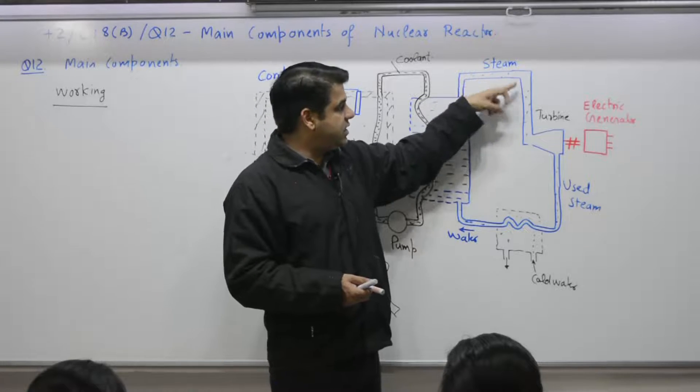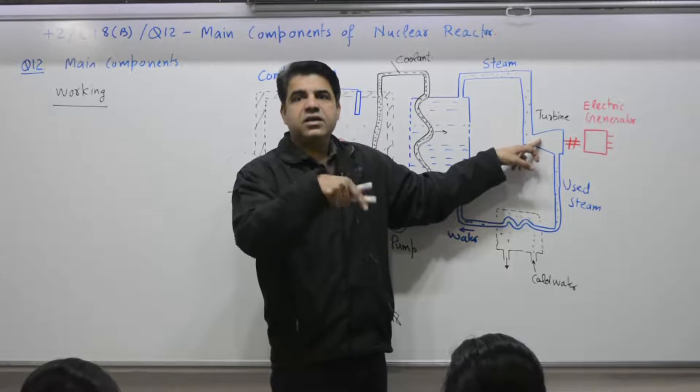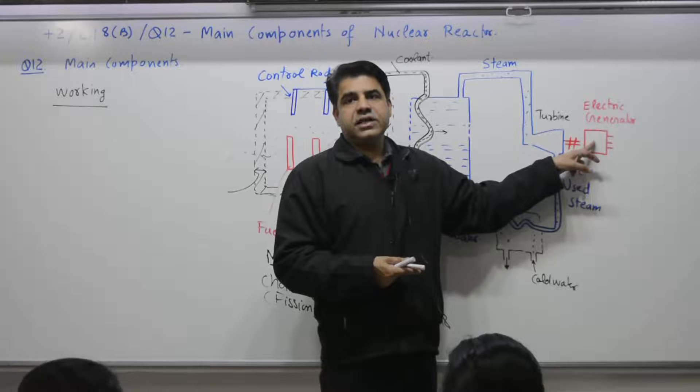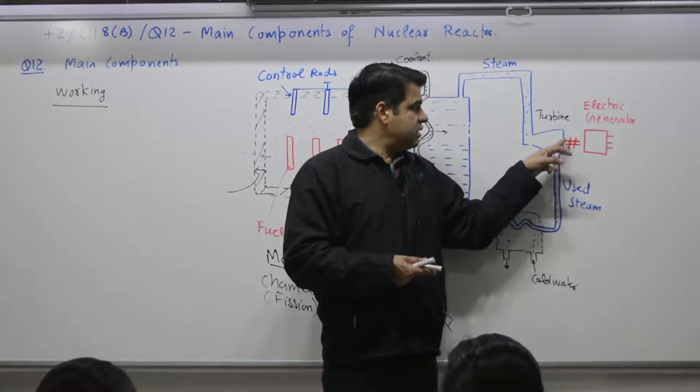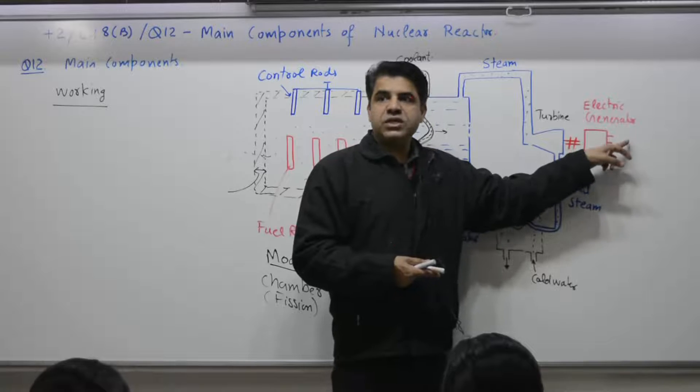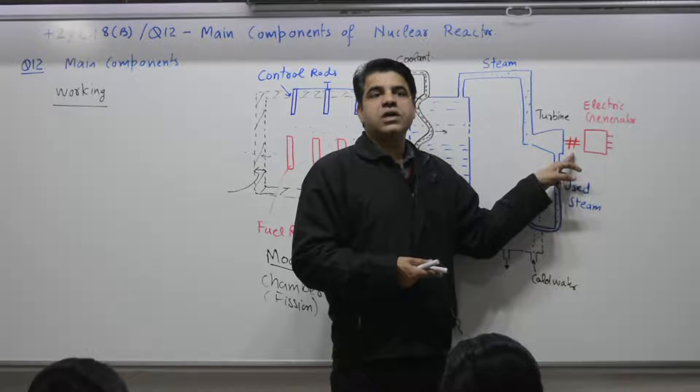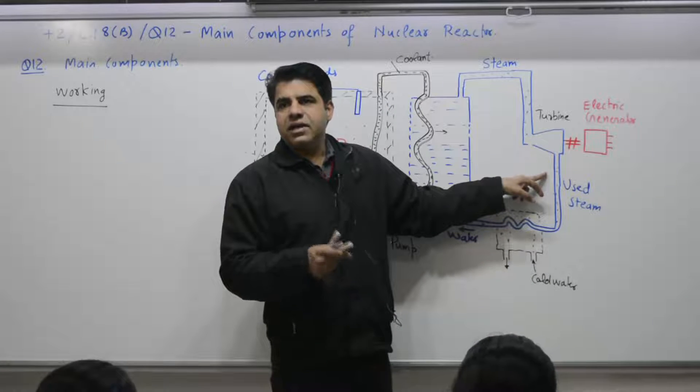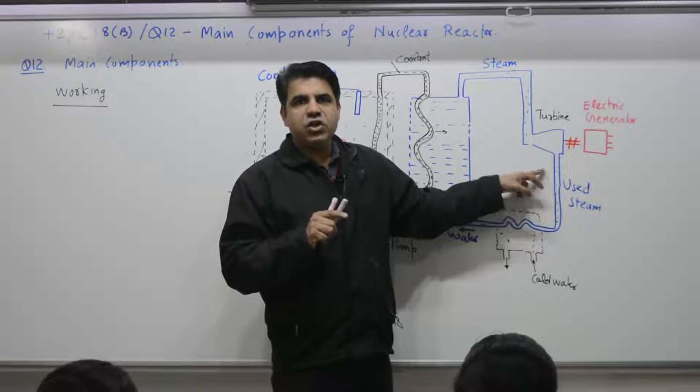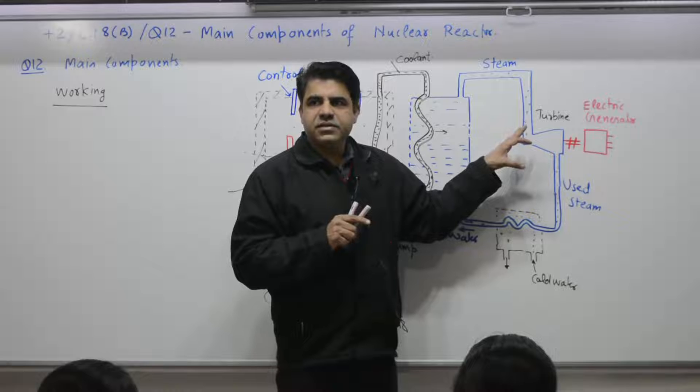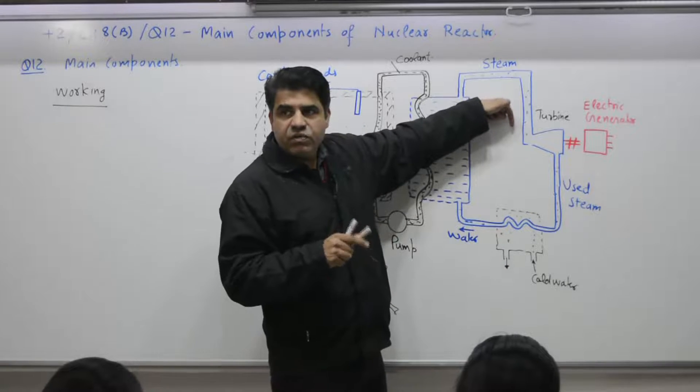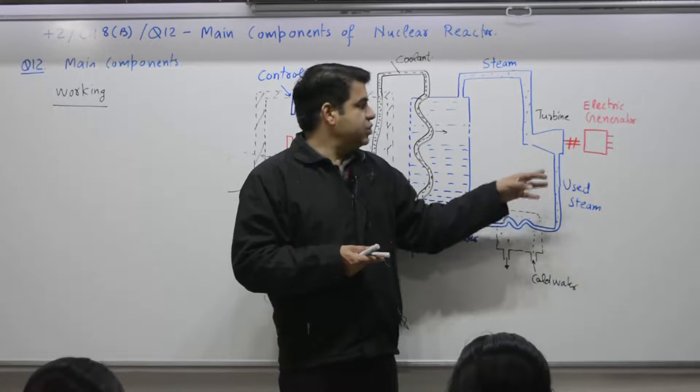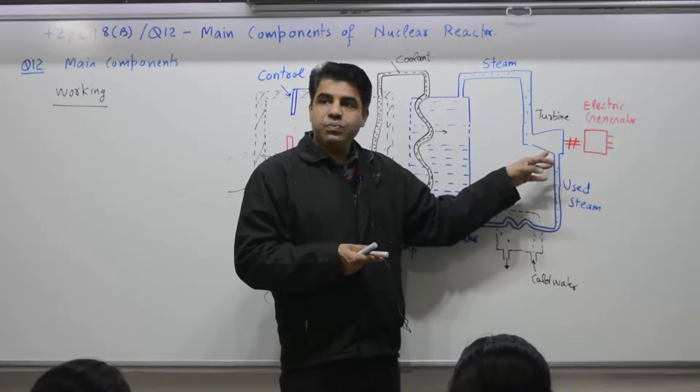So it will rotate the turbine. This rotation of turbine will further rotate electric generator. So once this motion starts, electricity is produced at this point. That means mechanical energy is converted to what? Electrical energy. Now the steam coming out is less energetic because it has lost its energy to turbine. So steam entering is with more energy, coming out steam is less energy. That is why term is used steam.